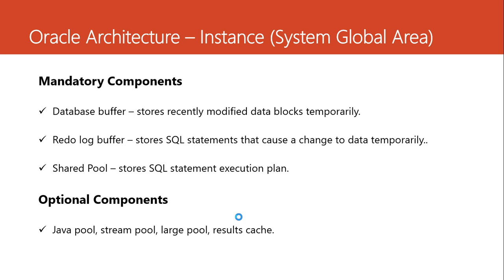The database buffer stores information that has been modified by the user temporarily. Assuming you are making a change — editing your username, posting an image, or posting a text — before that information is stored in the database, it is first stored in the SGA, specifically in a component called the database buffer. The instance doesn't store stuff permanently; everything is permanently stored in the database. So the database buffer is where we store all the modified data blocks and all the changes that have been made to data temporarily.